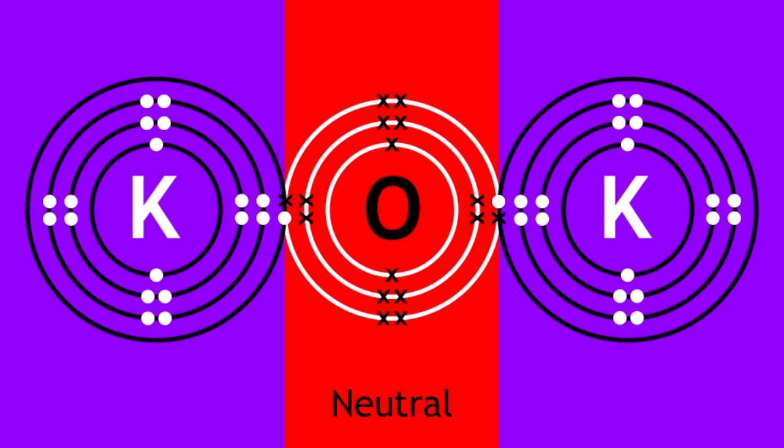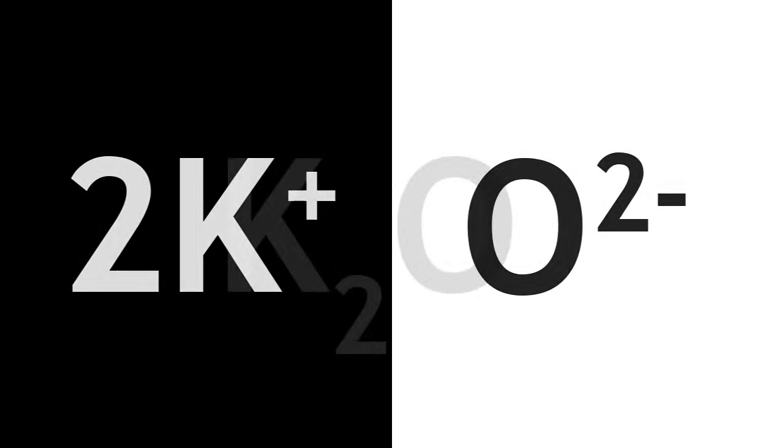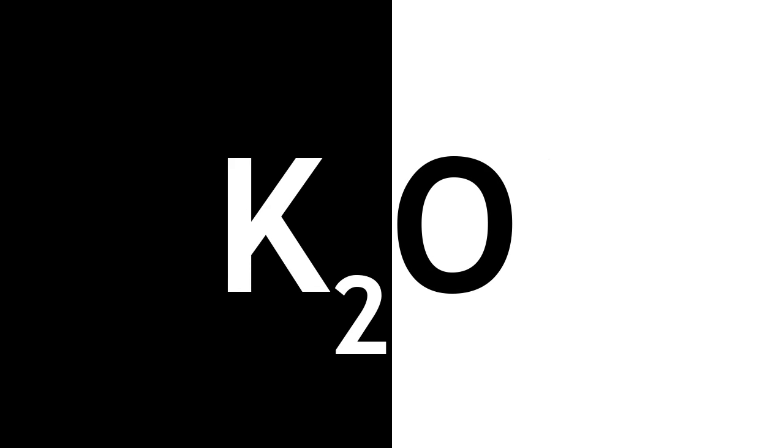In summary, when oppositely charged ions come together to form an ionic bond, the charges must fully balance out to form an overall neutral ionic compound.